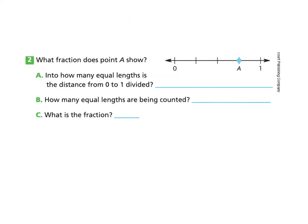Let's look at Part 2: what fraction does Point A show? For Part A, into how many equal lengths is the distance from 0 to 1 divided? We can count: 1, 2, 3, 4 equal lengths dividing 0 to 1, so we answer 4 equal lengths. For Part B, how many equal lengths are being counted? Starting from 0, we count 1, 2, 3 until we get to Point A, so there are 3 equal lengths.